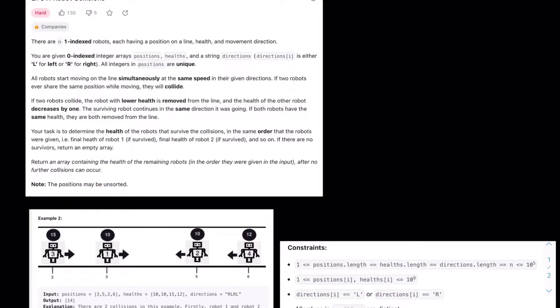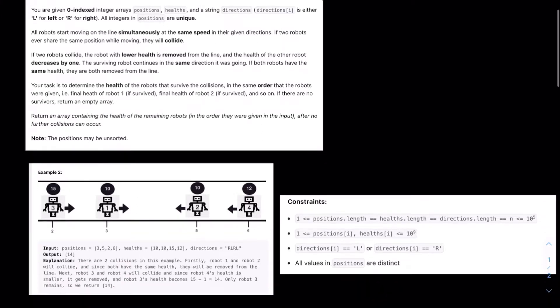Your task is to determine the health of the robots that survived the collision in the same order that the robots were given. Final health of robot 1 if it survived, final health of robot 2 if it survived, and so on. If there are no survivors, return an empty array.